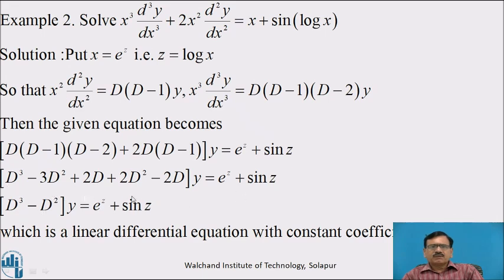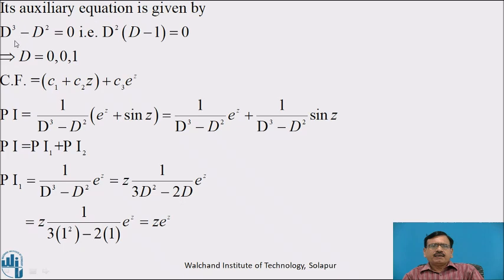Simplifying, D cubed minus D squared of y equal to e raised to z plus sin z, which is a linear equation with constant coefficients. Its auxiliary equation is D cubed minus D squared equal to 0, that is D squared(D minus 1) equal to 0, giving D equal to 0, 0, and 1. Since 0 is repeated, CF equals (c1 plus c2 z) plus c3 e raised to z. Now PI equals 1 by (D cubed minus D squared) of (e raised to z plus sin z), which we separate as PI1 plus PI2, where PI1 is 1 by (D cubed minus D squared) of e raised to z, and PI2 is 1 by (D cubed minus D squared) of sin z.